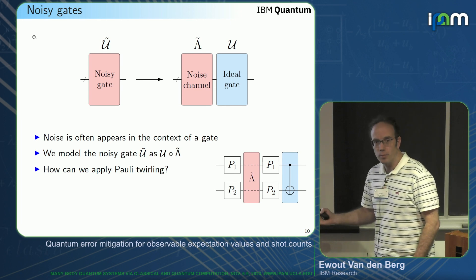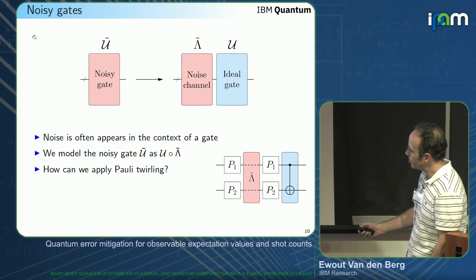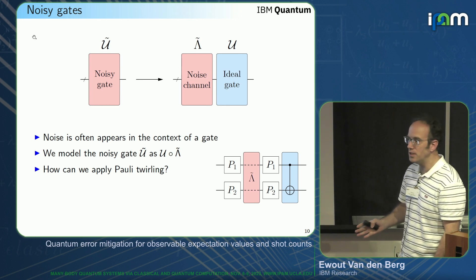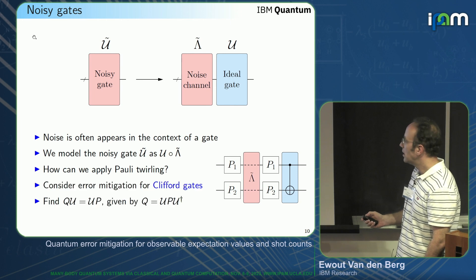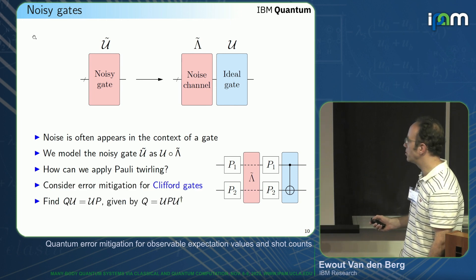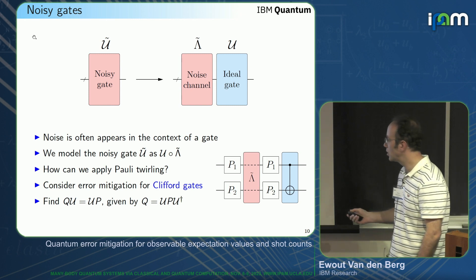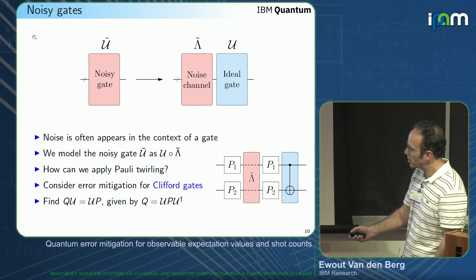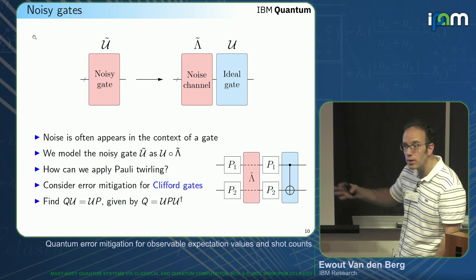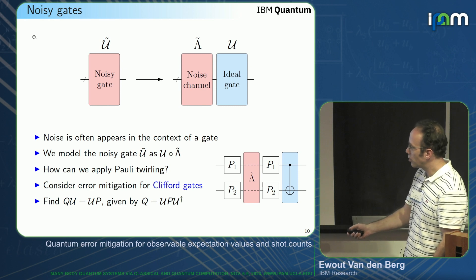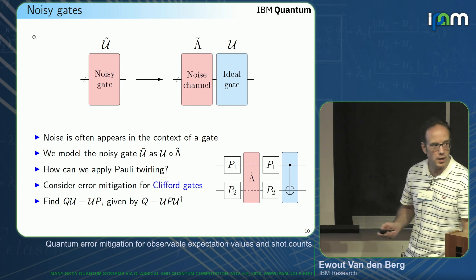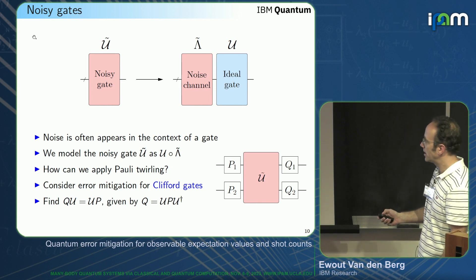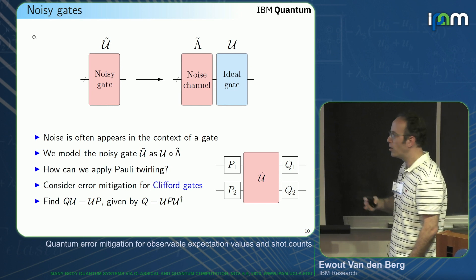To make this practical, we need to assume that the gates we mitigate noise for are Clifford gates. Instead of first applying a Pauli and then the operator, we want to find a Pauli Q such that you can first apply the operator and then apply the Pauli — you push it through. It turns out this is just conjugating the original Pauli by the ideal gate. So if we do that, we can switch the order, and effectively we've made the noise associated with this gate a Pauli noise channel on average.